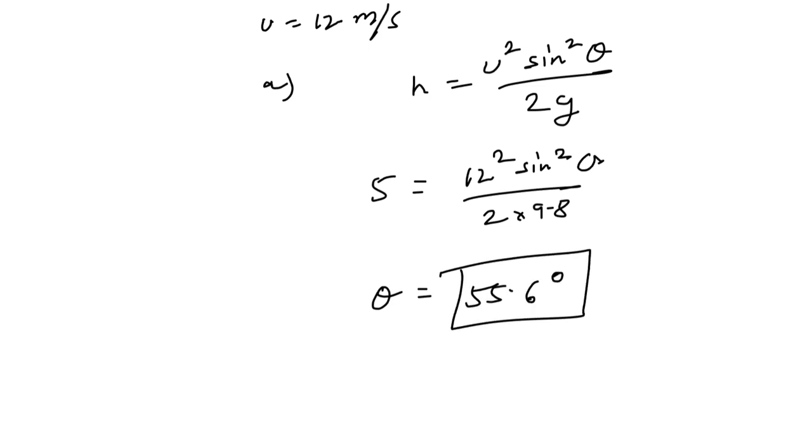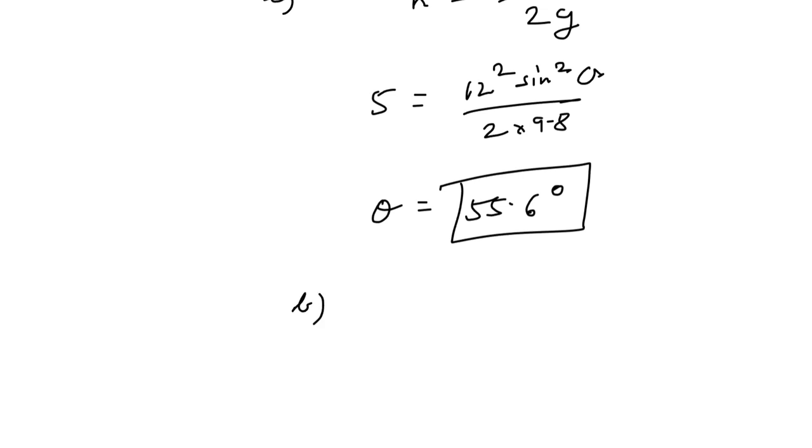Now we have to calculate the horizontal distance from the release point to the target. So again you can apply the formula for the range R of the projectile which is equal to u squared sine 2 theta by g.